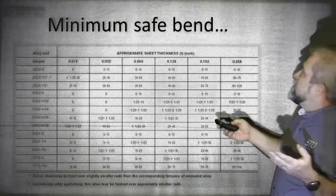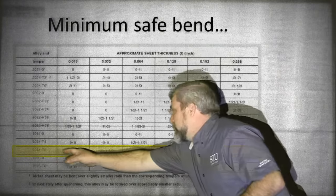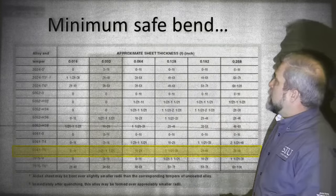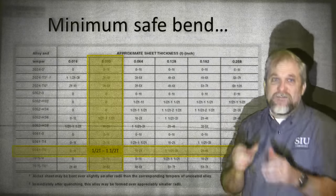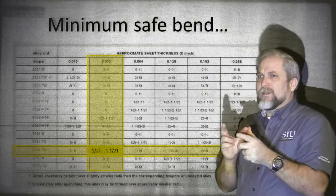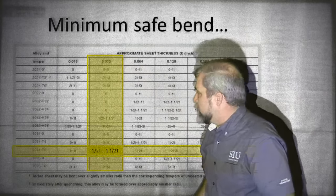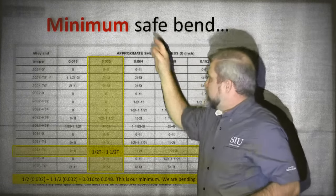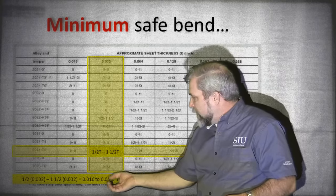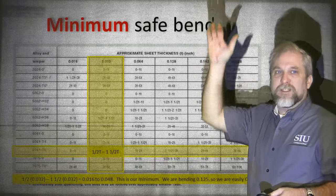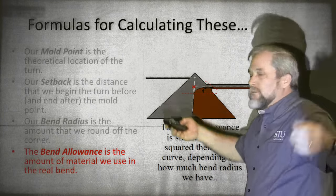Here I have a minimum safe bend chart. We're working with 6061-T6 alloy, so we select that row. Then we select the column for 32 thousandths material. Where they intersect, we find a one-half T to one-and-a-half T allowance for our minimum safe bend. That means 0.5 to 1.5 times the thickness, so multiplying 0.032 gives us 0.016 to 0.048 as our minimum safe bend. As long as we're above 0.048, we're good. Our particular bend is going to be made at 0.125, which is well above the minimum safe bend, so we're good.